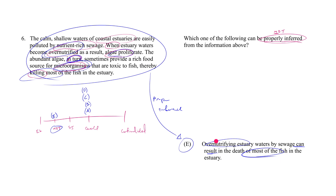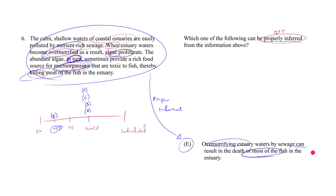If E had said over-neutrifying 'always' results in fish death, we couldn't pick it, because the B-to-C link in the chain is a 'sometimes' link, not an 'always' link. But the answer choice recognizes that and respects it — that's why it says 'can' rather than 'always.' They could have said 'sometimes,' which would also be fine. When you say 'can,' you're merely preserving the possibility of the thing to happen.